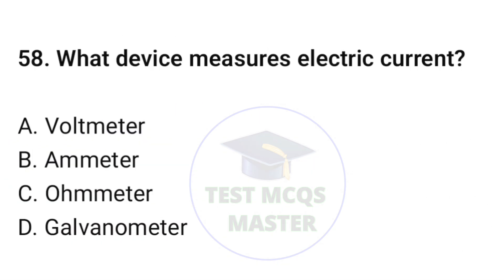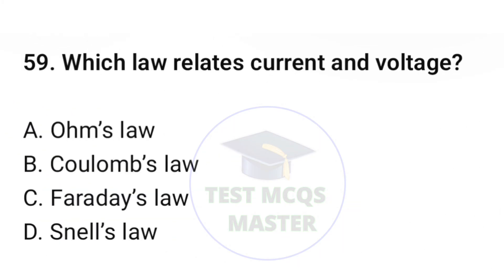Question number fifty-eight: what device measures electric current? The correct option is B, ammeter. Question number fifty-nine: which law relates current and voltage? The correct option is A, Ohm's law.